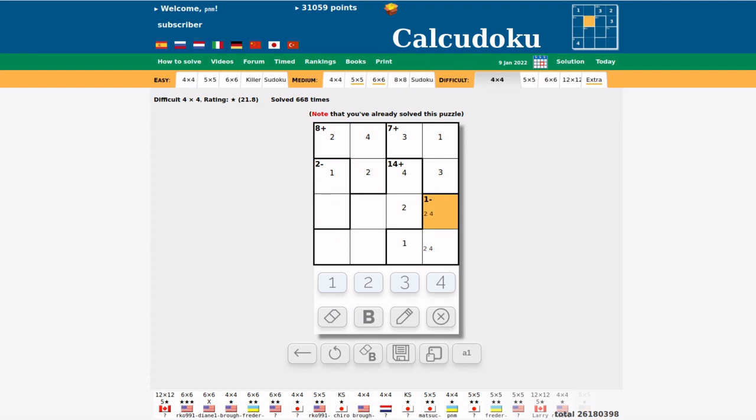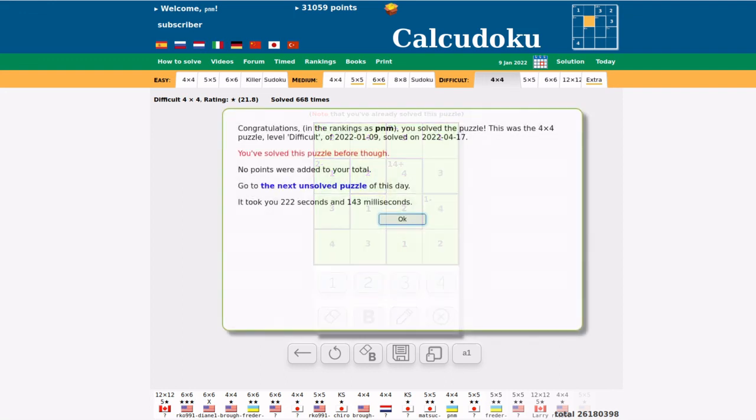Therefore this becomes a 2, this becomes 4, 2, 3 minus 1 is 2, 4, 3, 1, and we solved it.